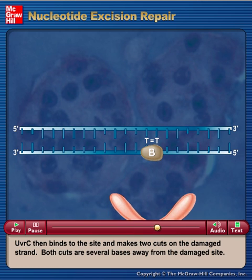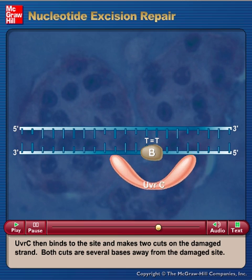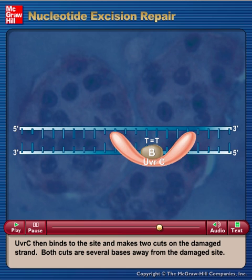UVRC then binds to the site and makes two cuts on the damaged strand. Both cuts are several bases away from the damaged site.